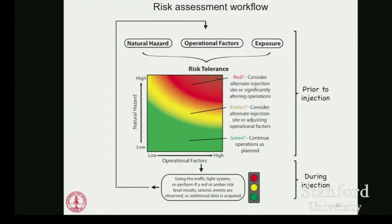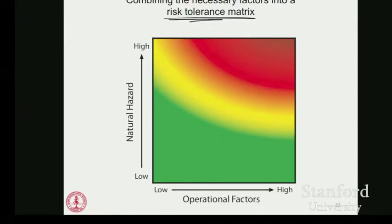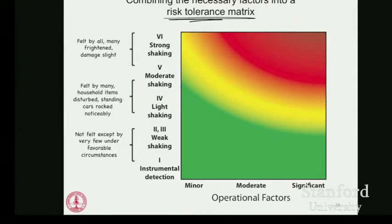We bring all the factors into what we call a risk tolerance matrix. The x-axis considers the operational factors from low to high — what is the influence of those operational factors on the overall hazard? On the y-axis we have natural hazard from low to high. The natural hazard here is represented using the Modified Mercalli Intensity scale — the actual felt ground shaking at a particular site. Are your dishes rattling? Does building damage start to occur? That's what this intensity scale represents.